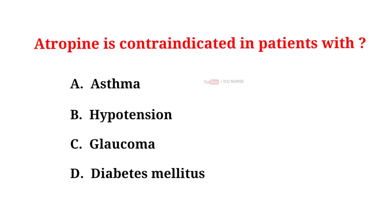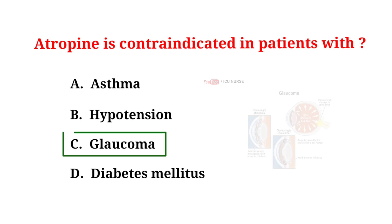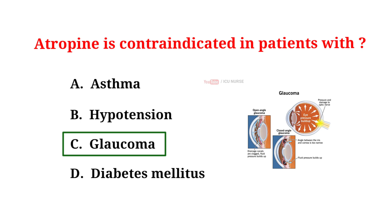Atropin is contraindicated in patients with: A. Asthma, B. Hypotension, C. Glaucoma, D. Diabetes mellitus. The correct answer is C. Glaucoma. Atropin is contraindicated in patients with narrow-angle glaucoma as it can cause an increase in intraocular pressure.